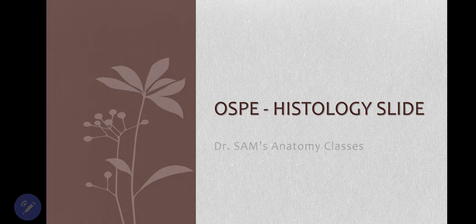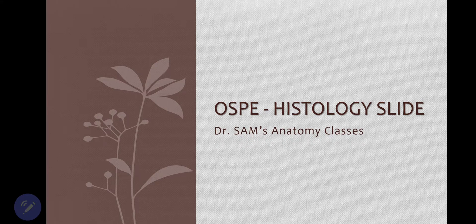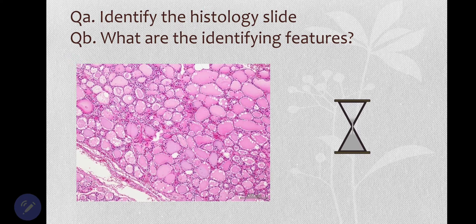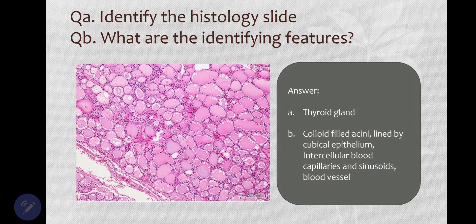This is an OSCE histology slide. Identify the slide and its identifying features. This slide is of the thyroid gland. Now, how do we identify that it's thyroid?